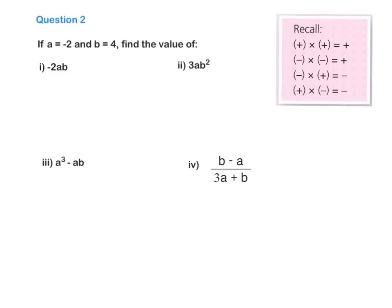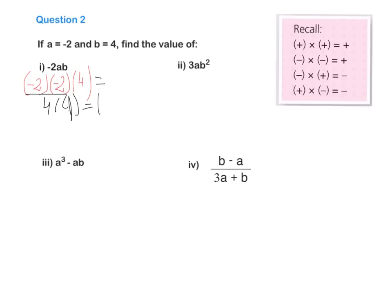Let's start with the first question: minus 2AB, so minus 2 multiplied by A multiplied by B. The first step is to write it down again but instead of letters, put in numbers. So we have minus 2 multiplied by A, and A is minus 2, multiplied by B, and B is 4. Minus 2 multiplied by minus 2: minus multiplied by minus, the answer is positive. So we have 4, and 4 multiplied by 4 is 16.